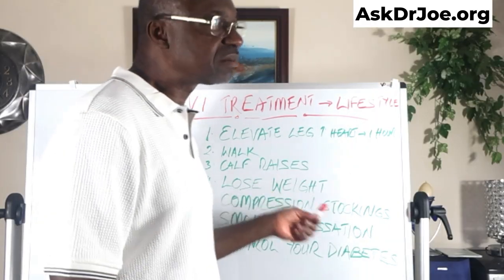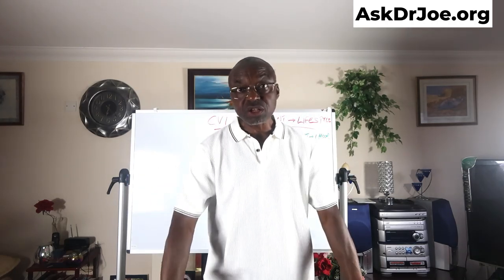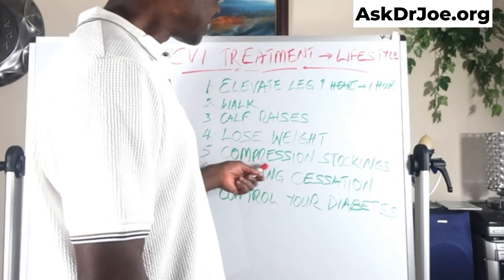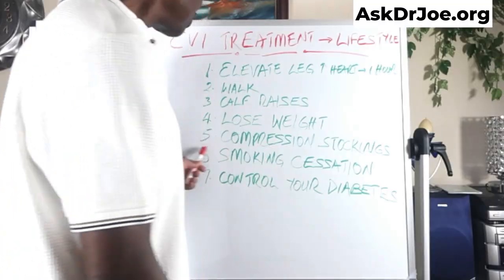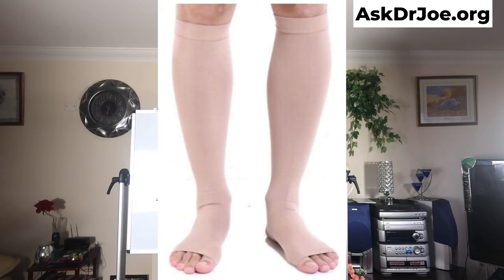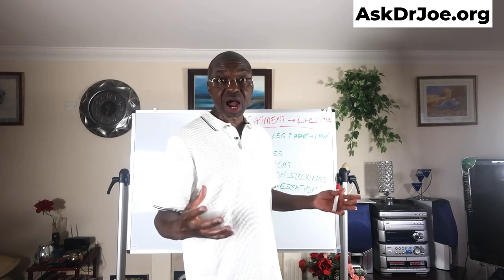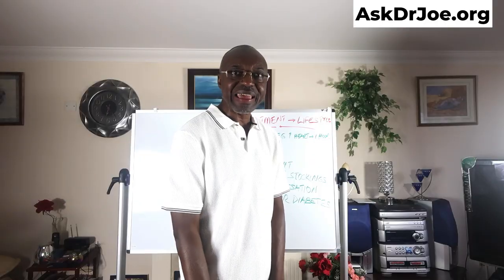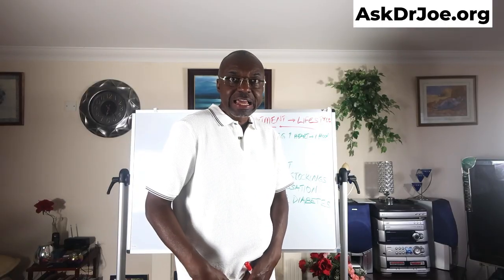Number four: lose weight. Where you have a lot of weight, that's a lot of intra-abdominal pressure on the pelvic veins, and that leads to a lot of pressure on the veins of the legs as well — so lose the weight. Number five: compression stockings. These work very well. The idea is they help pump blood back to the heart. There are graduated types that are tighter at the ankle and the tightness reduces as you get to the thighs — just get some.